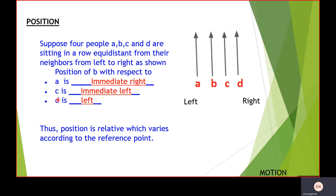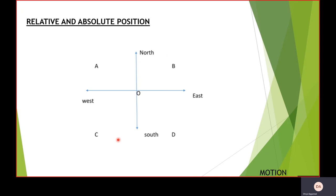So we can see that the position of B changes with respect to the reference point that we have taken. For example, A, C and D. So position is relative. That is, it varies according to the reference point. So if we have taken a reference point and then we have determined the position, that is our relative position.